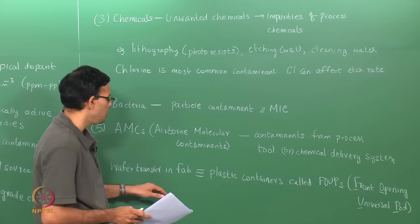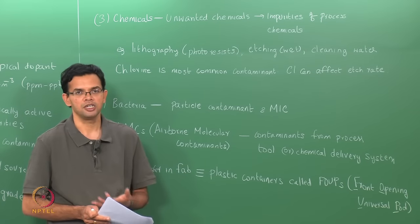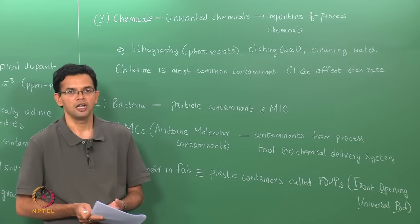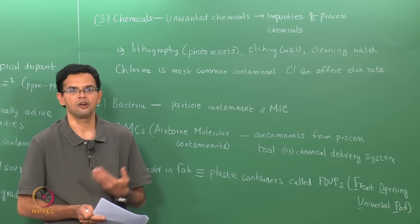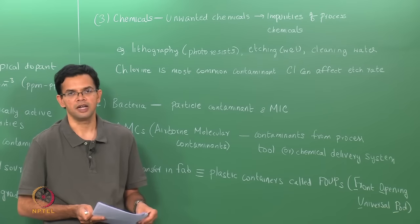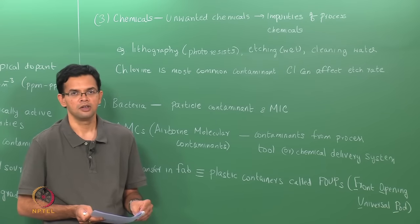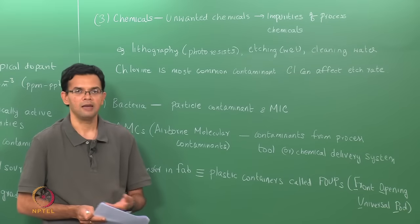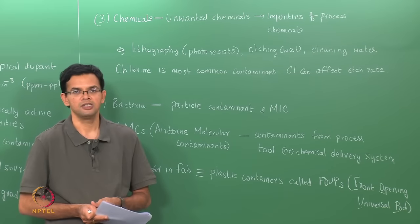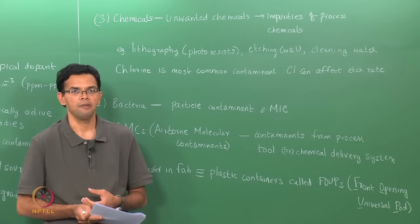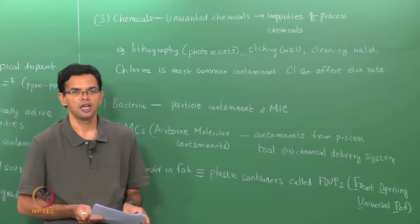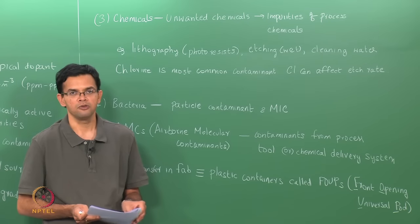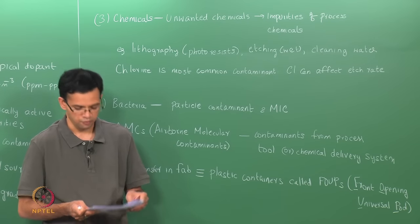Usually some sort of nitrogen purging is done in order to minimize contamination, but this can cause additional issues with the purity of nitrogen. The point is there are different types of contaminants for wafers in the fab, and all of these have to be minimized in order to improve the yield.